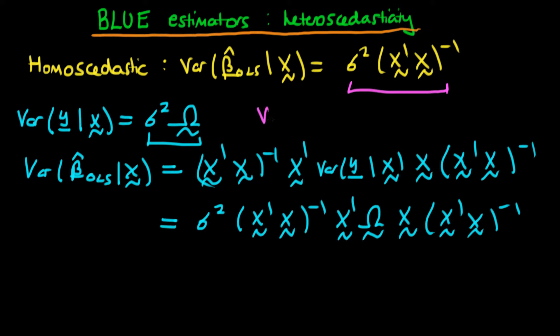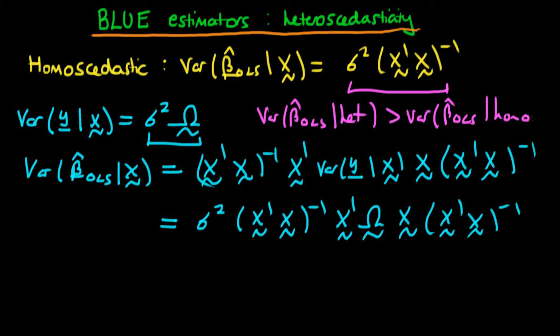Note that this is not the same as the variance of OLS estimators in the presence of homoscedasticity. It is actually possible to show that the variance of beta hat OLS in the presence of heteroscedasticity is actually greater than in the presence of homoscedasticity. So if you assume homoscedastic errors, as most statistical software programs do, you will actually underestimate the true variance of your estimators if heteroscedasticity is present.